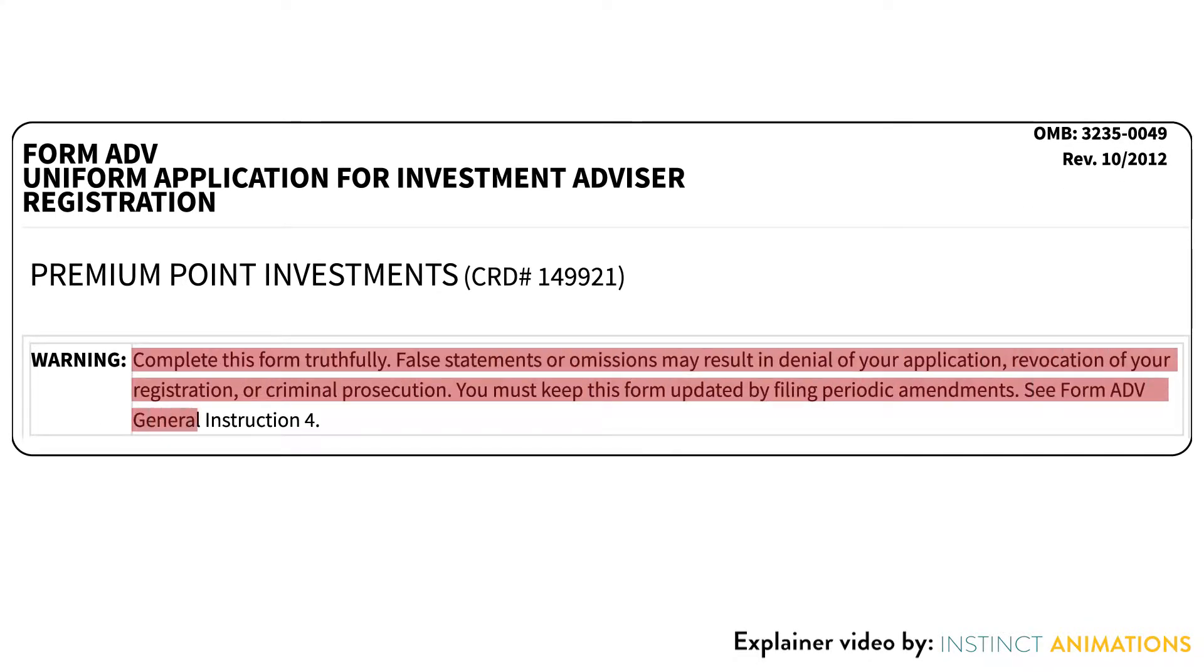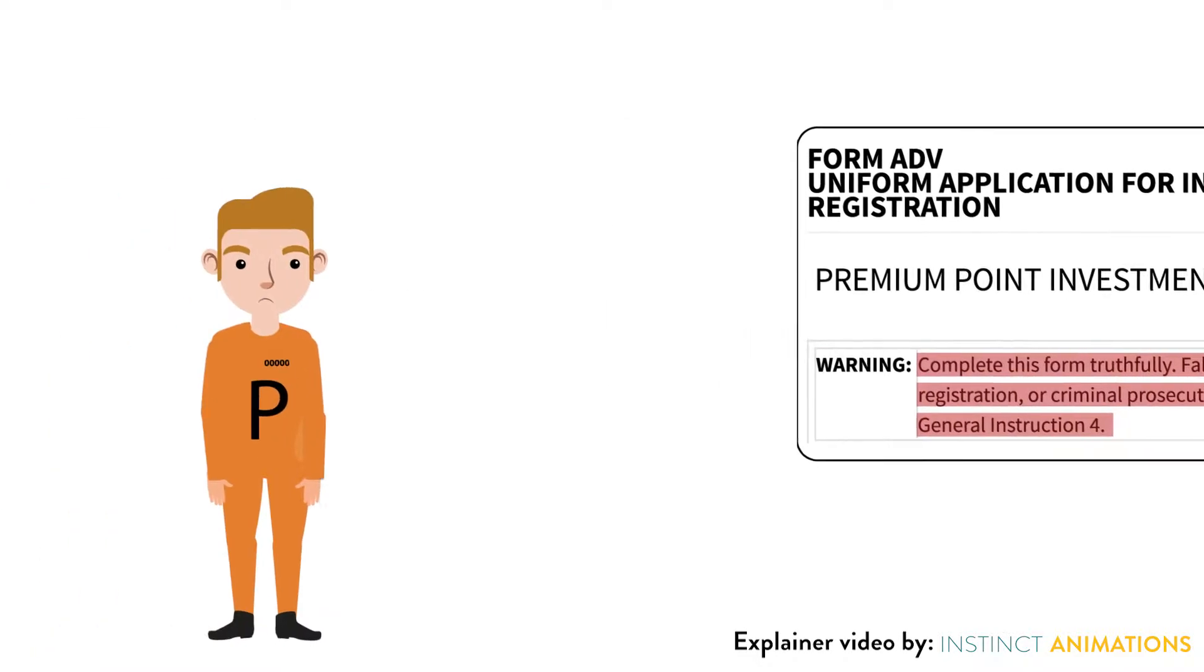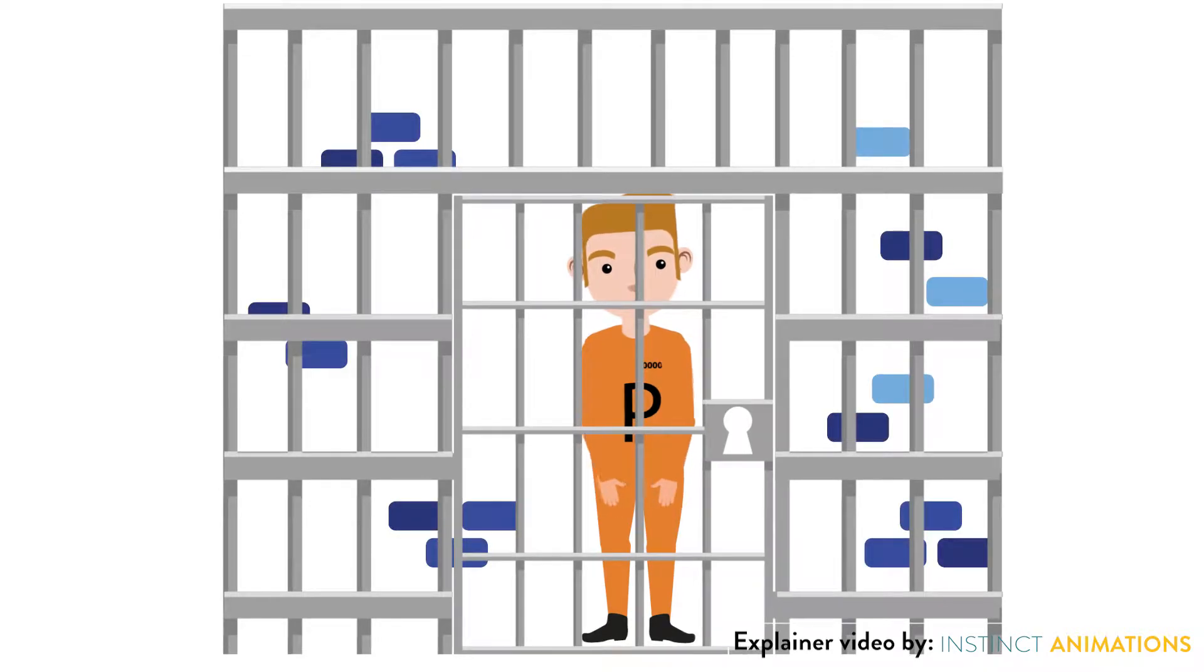As a compliance officer, you're familiar with the warning of criminal and civil penalties for making material misstatements or omissions in your Form ADV.